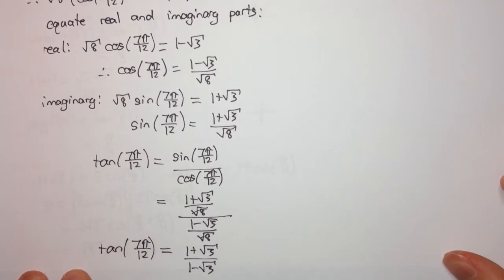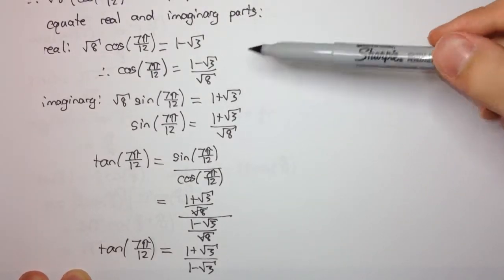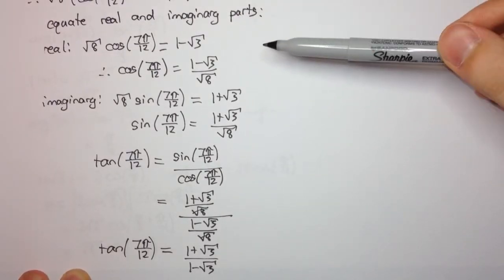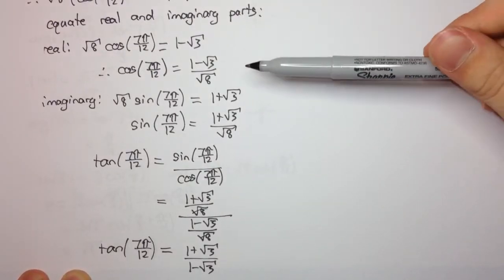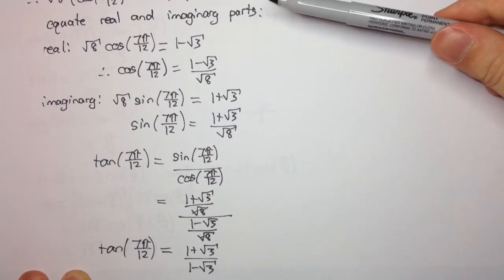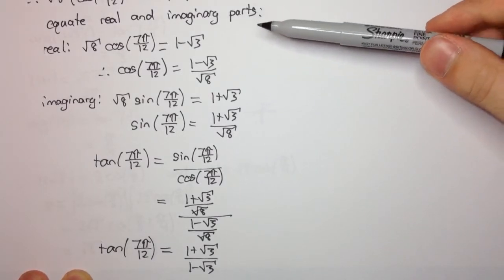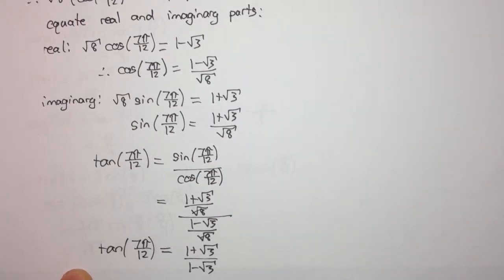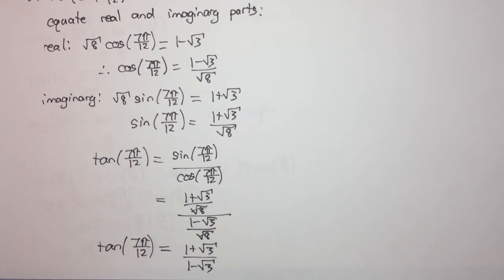The key trick was recognizing that we can equate the real and imaginary parts because we have two different expressions for the same complex number z. I hope you enjoyed the video — more videos will be coming in the future. Thank you.